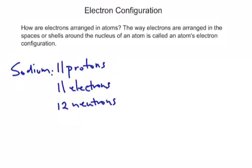Welcome to this tutorial. This tutorial focuses on something called electron configuration. This is a very fancy way of just talking about how electrons are arranged in the spaces or shells around the nucleus of an atom.